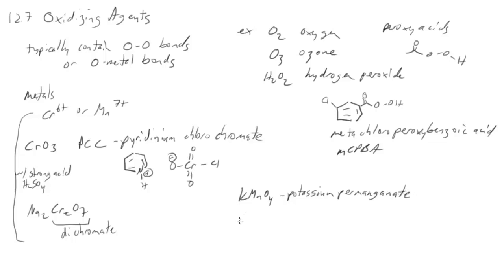Then there are a couple of others that are different that we're going to see this chapter, things like OsO4, which is osmium tetroxide, and silver oxide.